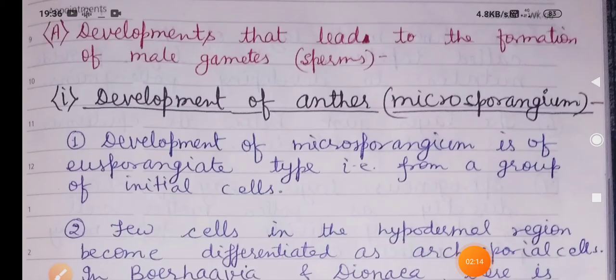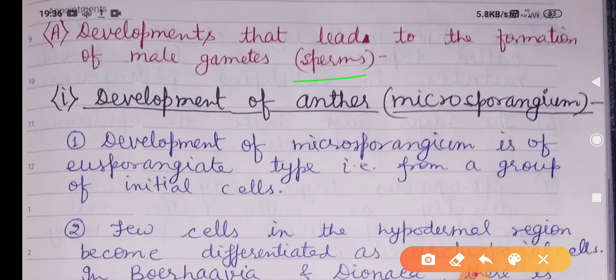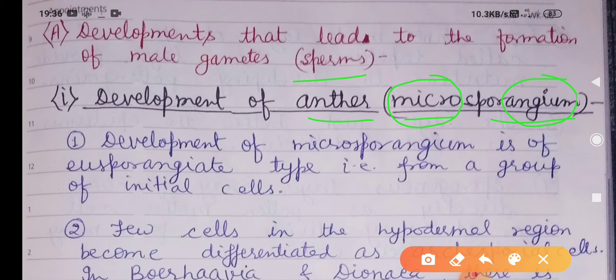Development that leads to formation of male gamete sperm includes first the development of anther or microsporangium. The micro word here comes for pollen grains, and 'angium' means thala or bag. That means pollen grains are found in that bag — that means anther.